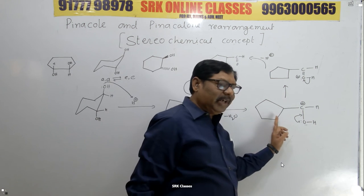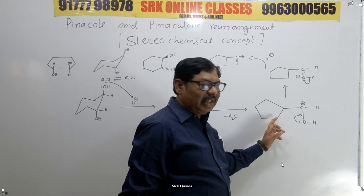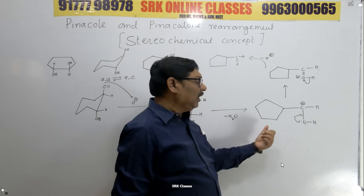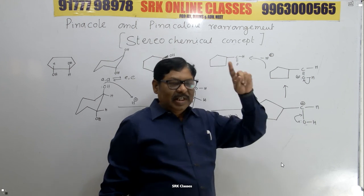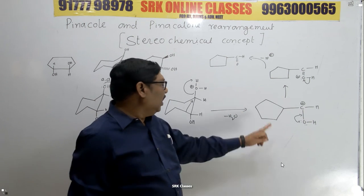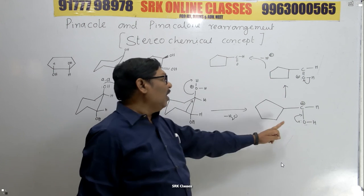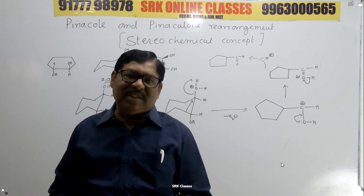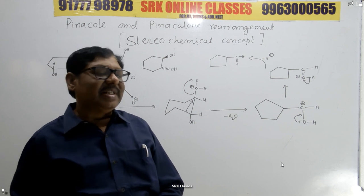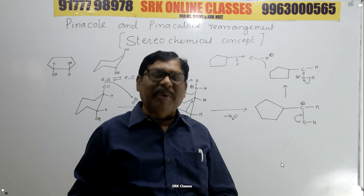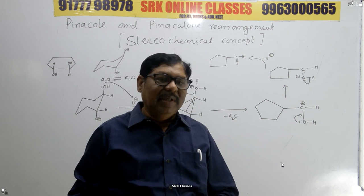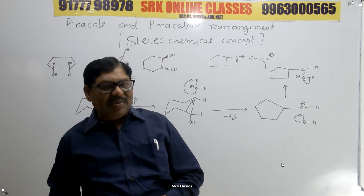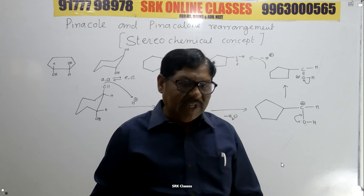The six-membered ring is converted into a five-membered ring — ring contraction takes place. In the cis compound there is no contraction; in the trans compound, ring contraction takes place. In the cis compound a six-membered ketone (cyclohexanone) is formed; in the trans compound a five-membered aldehyde is formed. That is the difference between the cis and trans compounds in the stereochemistry of pinacol-pinacolone rearrangement. If you like this video, kindly promote. Thank you.